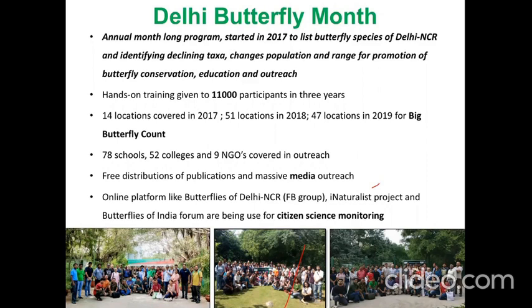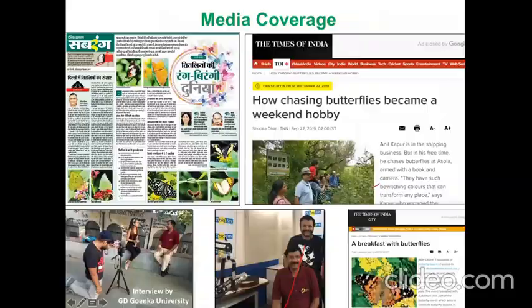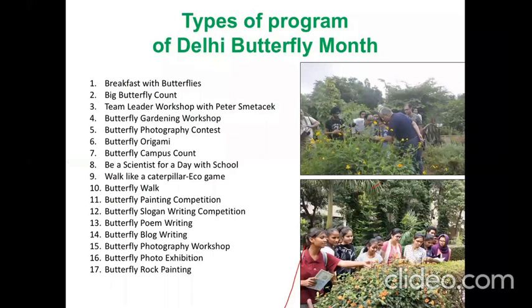These are photographs of some of the groups that are happening. These are some of the stories and radio interviews that we have done. If anybody would like to start a campaign like this, I would suggest taking the help of media — it's quite easy and media is looking for good and positive stories, so they will be quite helpful and cover your conservation movements. The types of programs we have done include Breakfast with Butterfly, Big Butterfly Count, a team leader workshop with Peter on in-depth identification training, butterfly gardening, photography, origami, and campus counts.